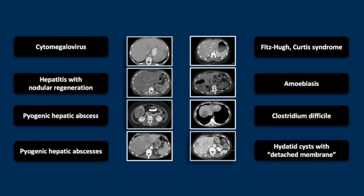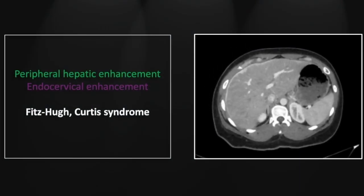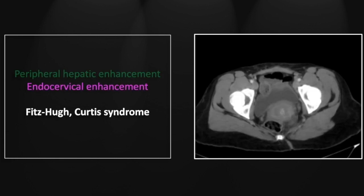Our next case is a gonorrheal infection resulting in Fitzhugh-Curtis syndrome. This is a beautiful example showing peripheral hepatic enhancement — parenchymal subcapsular enhancement of the liver that was only present on the early arterial phase images. In addition, the ultimate source of the problem can be determined to be a cervicitis. You see the enhancing mucosa of the endocervical canal — a pretty unusual finding — with significant edema or hypodensity of the adjacent cervix itself, putting that in marked contrast.